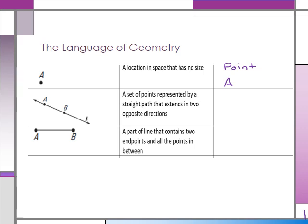A set of points represented by a straight path that extends in two opposite directions is a line. We can name this line a couple of different ways: this lowercase cursive letter L names the line as line L, or we can use two points A and B to name the line. We write it as AB or BA, but it has to have a little line symbol over the top of it.